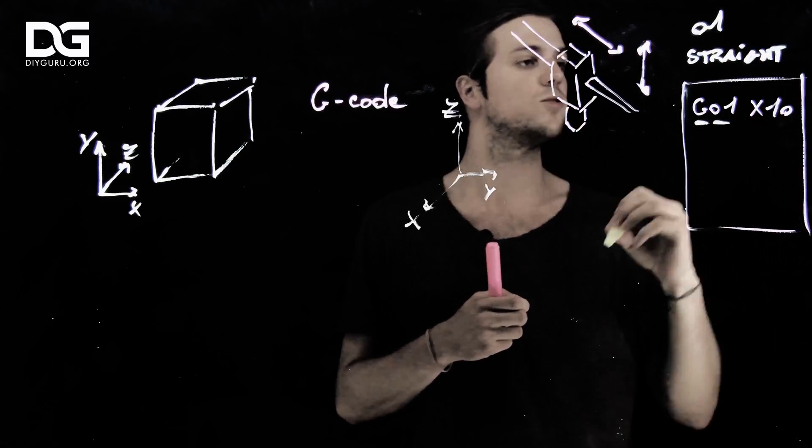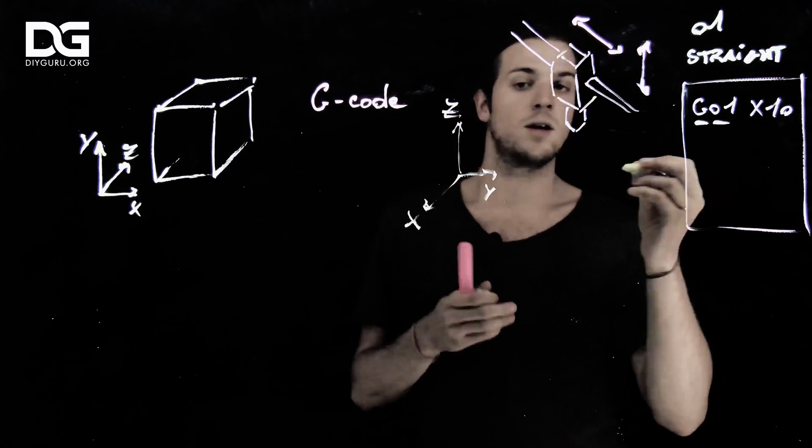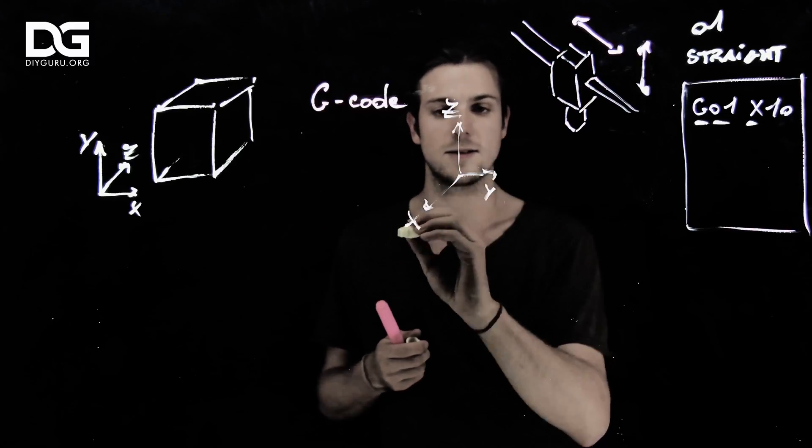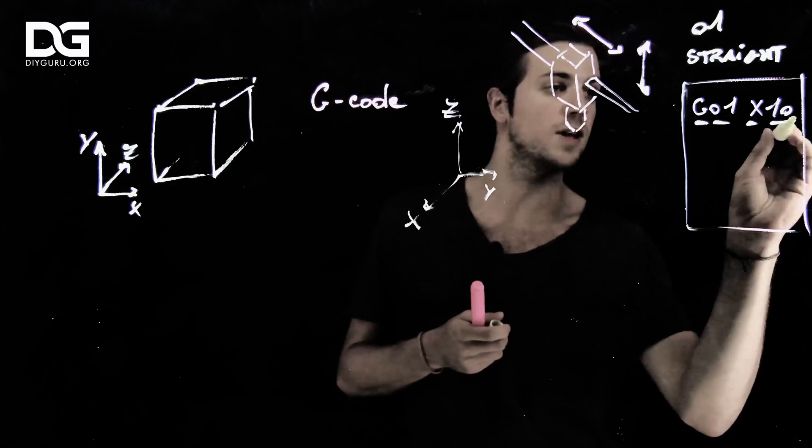This 01 actually means straight line. I just want my machine to go straight. But in which direction? You guessed it, along the X axis. So along this direction from 10 units.